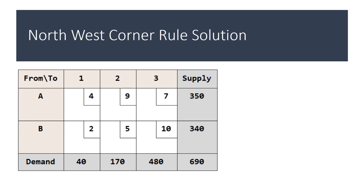So let's look at the north-west corner rule solution. With the north-west corner rule, the starting point is to allocate as much as possible to the cell that is at the north-west corner. Comparing these two numbers, you have to allocate 40 in the cell from A to 1, so that column is now full.